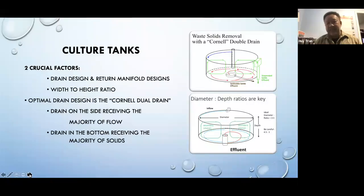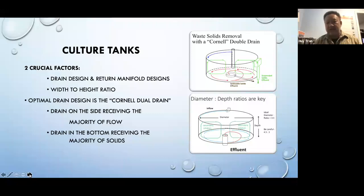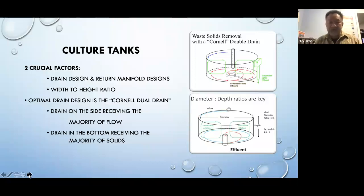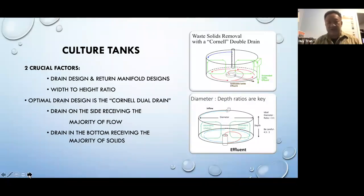Culture tank design is crucial. Design it so you're able to do a single harvest from the tank — you don't want a tank so large that you have to enter multiple times for multiple harvest cycles, because that stresses the fish and can cause disease or mortality. Basic tank design considerations include width versus height, which dictates your flow rate and the type of drain you use. Cost is also a big issue.